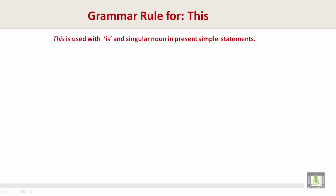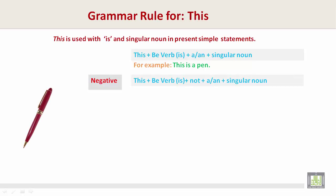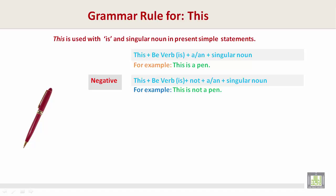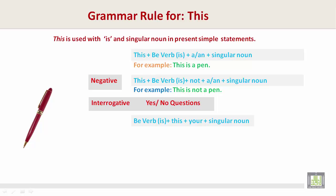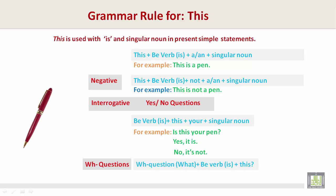Grammar rule for 'this': 'This' is used with 'is' and a singular noun in present simple statements. Structure: this + is + a/an + singular noun. For example: 'This is a pen.' Negative: this + is + not + a/an + singular noun. For example: 'This is not a pen.' Yes/No questions: is + this + your + singular noun. For example: 'Is this your pen?' — Yes, it is. No, it's not. WH-question: what + is + this? — 'What is this?'